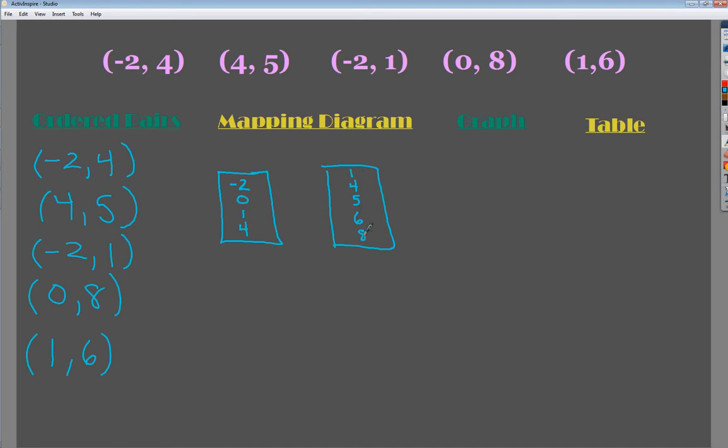Now I'm just going to draw a line to show how they're related. So negative 2 goes to 4, 4 goes to 5, negative 2 goes to 1, 0 goes to 8, and 1 goes to 6. Now, the reality here is if you put them down, like if I wrote negative 2 down twice, I couldn't see that that domain value actually goes to two ranges. So don't write it down twice or the visual is lost.